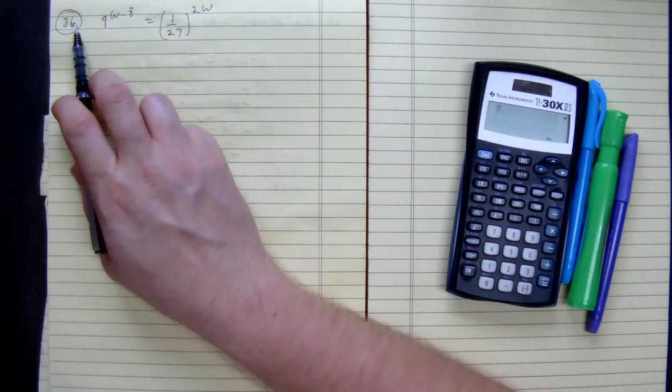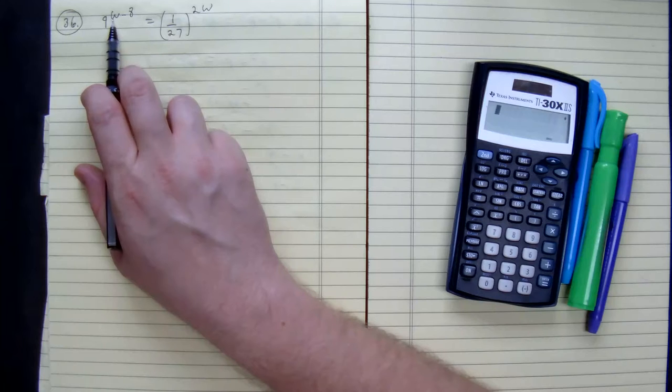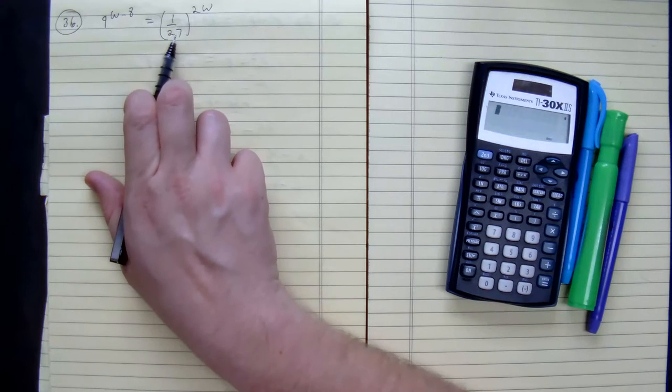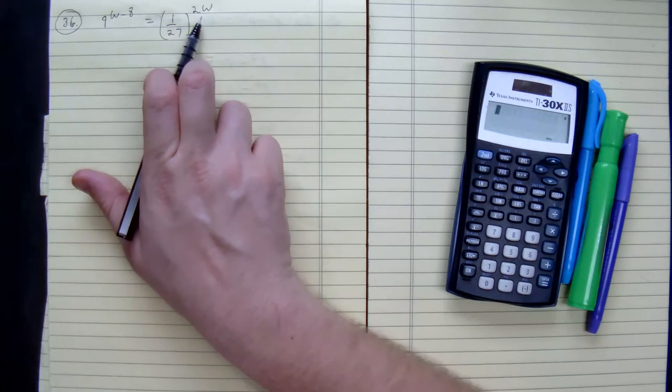Number 36: we have 9 to the power of w minus 8 equals 1 divided by 27 to the power of 2w.